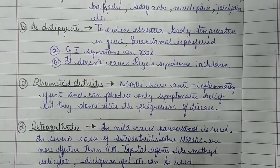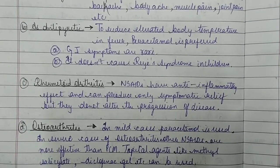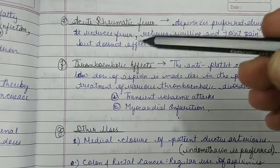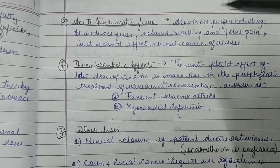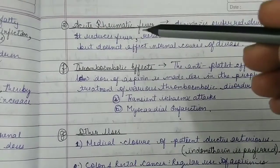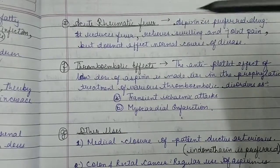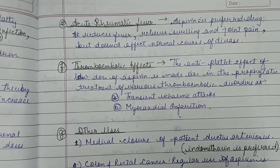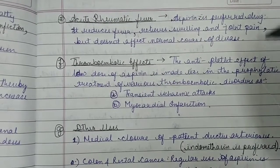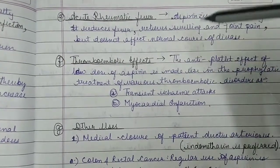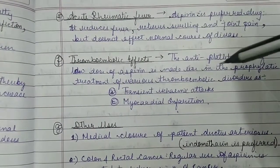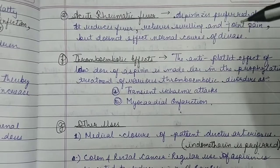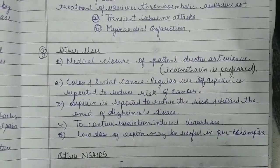For osteoarthritis, paracetamol is used in mild cases; other NSAIDs are more effective in severe cases. Topical agents like methyl salicylate and diclofenac gel can also be used. For acute rheumatic fever, aspirin is the preferred drug — it reduces fever, swelling, and joint pain but does not affect the normal course of the disease. Due to its anti-platelet effect, low-dose aspirin is used in prophylactic treatment of thromboembolic disorders like transient ischemic attacks and myocardial infarction.